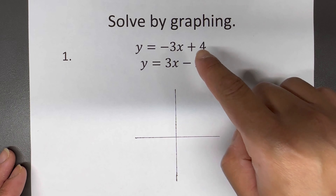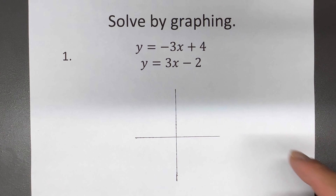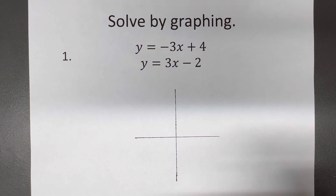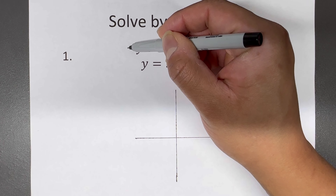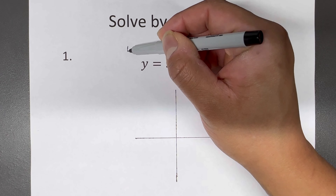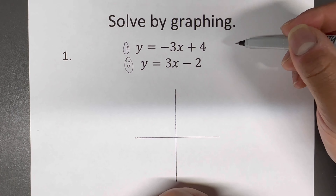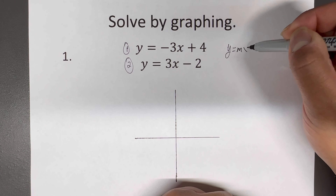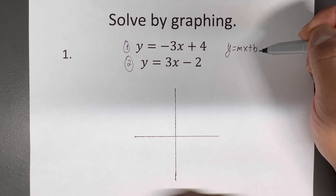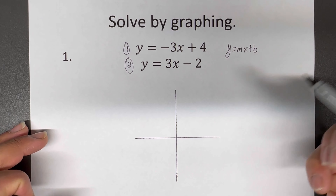So it says solve by graphing — we're given two lines. We could separate them by one and two, you can do A or B, it really doesn't matter. If we're talking about systems of equations using graphing, we want to use the form Y equals MX plus B. There are a lot of ways of solving this; I just think this is the easiest way.